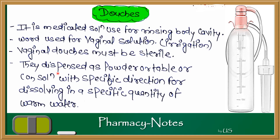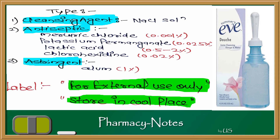Douches are dispensed as powder, tablet, or concentrated solution with specific directions for dissolving in a specific quantity of warm water. They are then inserted using specific bottles. They can be used as antiseptics — mostly NaCl solution — or as antiseptics such as mercury chloride, potassium permanganate, lactic acid, and chlorhexidine. As astringents, alum 1% is used. The label should state: for external use only, and stored in a cool place.